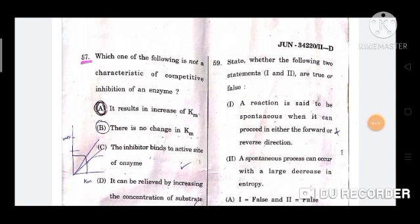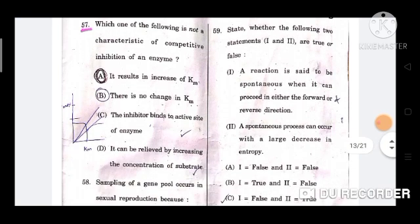Question number 57: Which one of the following is not a characteristic of competitive inhibition of an enzyme? The correct option is option B, there is no change in Km.